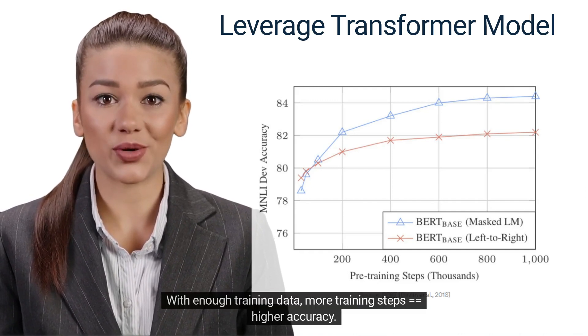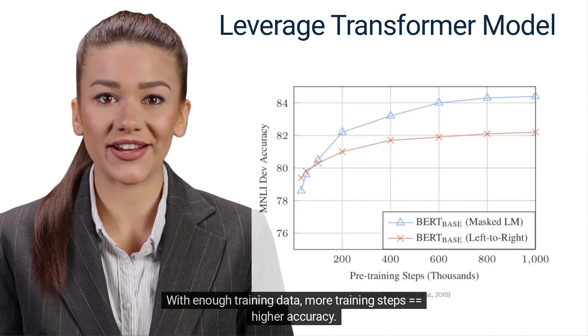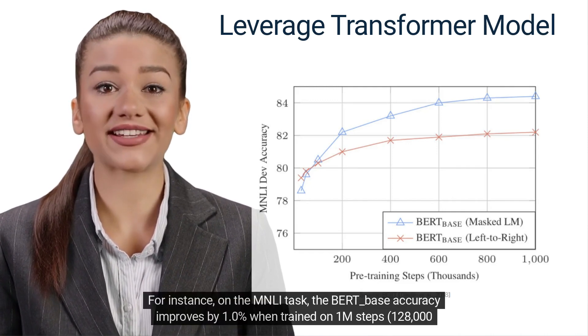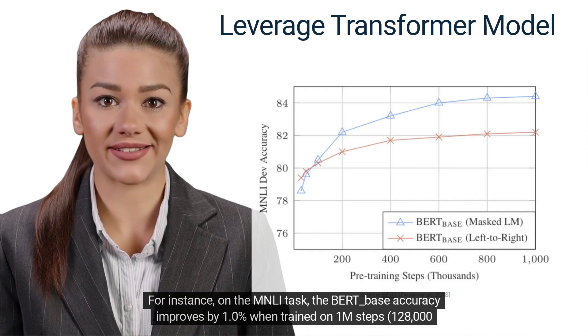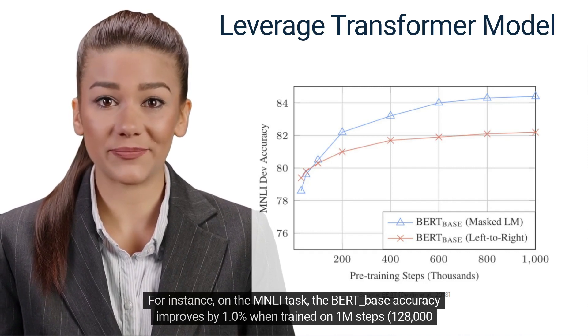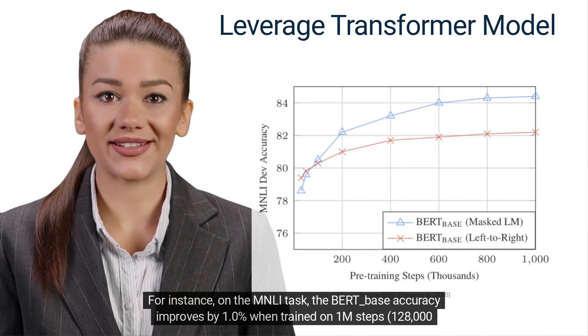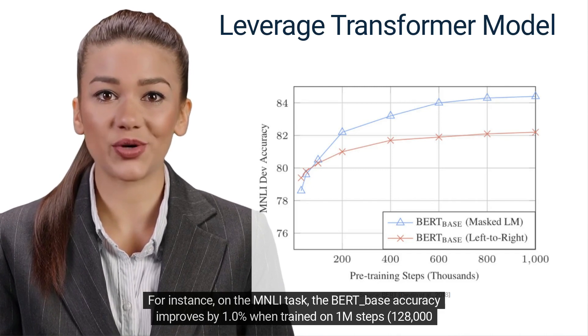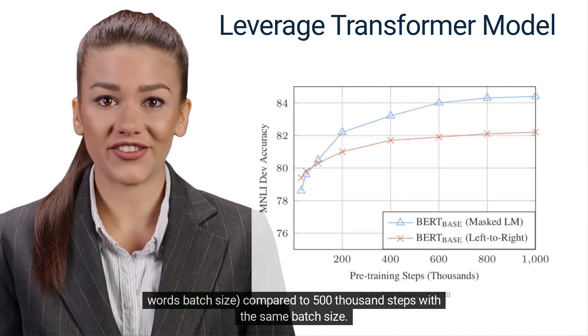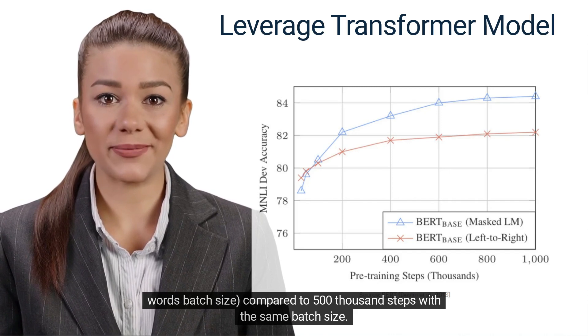With enough training data, more training steps equals higher accuracy. For instance, on the MNLI task, the BERT_base accuracy improves by 1% when trained on 1M steps with 128,000 words batch size, compared to 500,000 steps with the same batch size.